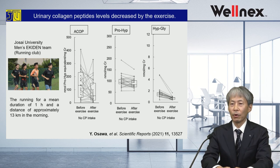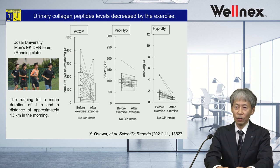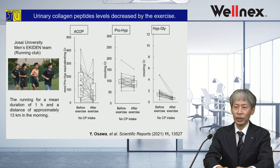This slide shows change of collagen peptide in urine from running team students after training. This study is supported by members of Josai University's men's running team. These athletes trained at a light jog for one hour every morning. Before and after training, urine was collected and ACOP was measured by ELISA, and prolyl hydroxyproline and hydroxyprolyl glycine were measured by LC-MS/MS method. ACOP, prolyl hydroxyproline, and hydroxyprolyl glycine were all decreased after training in athletes. These data suggest that collagen peptides are used in the body through exercise.